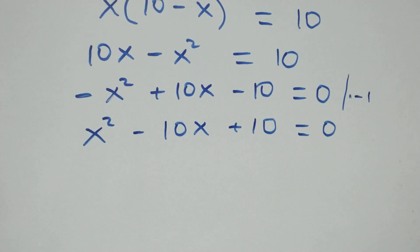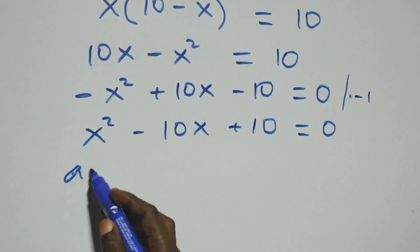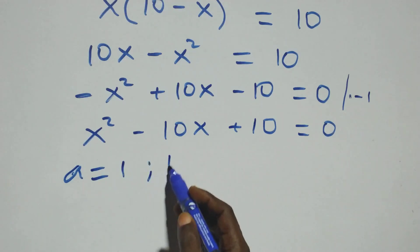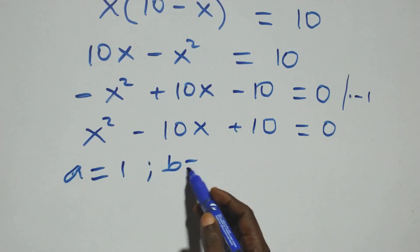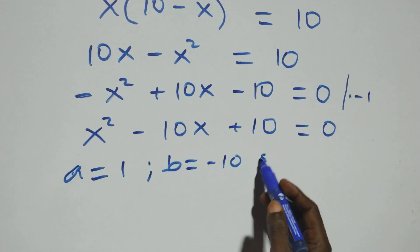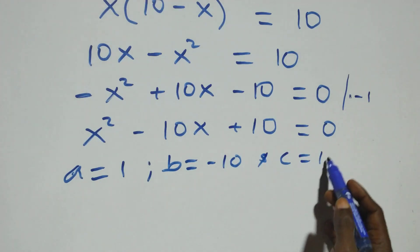We now have a quadratic equation where a equals 1, b equals minus 10, and c equals 10.